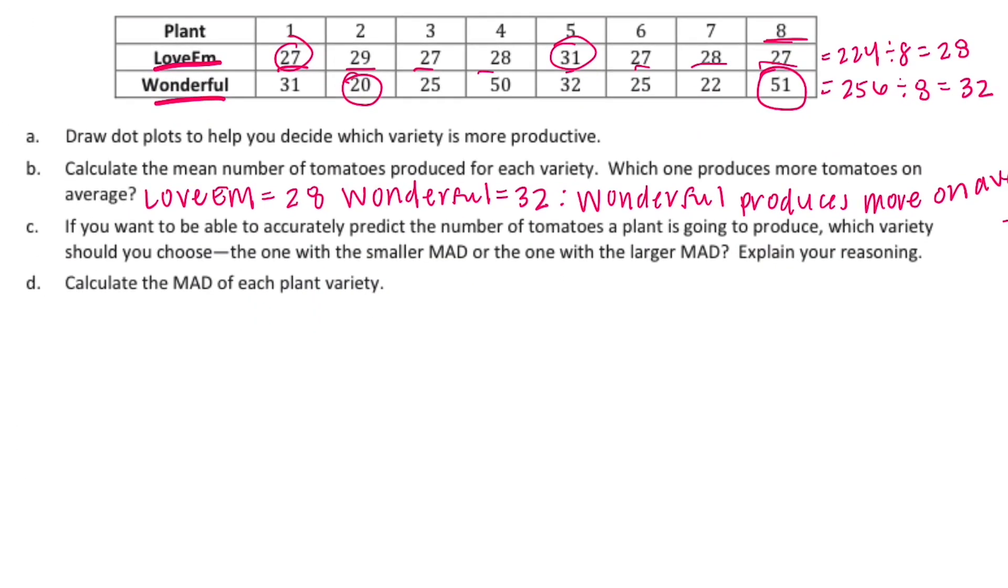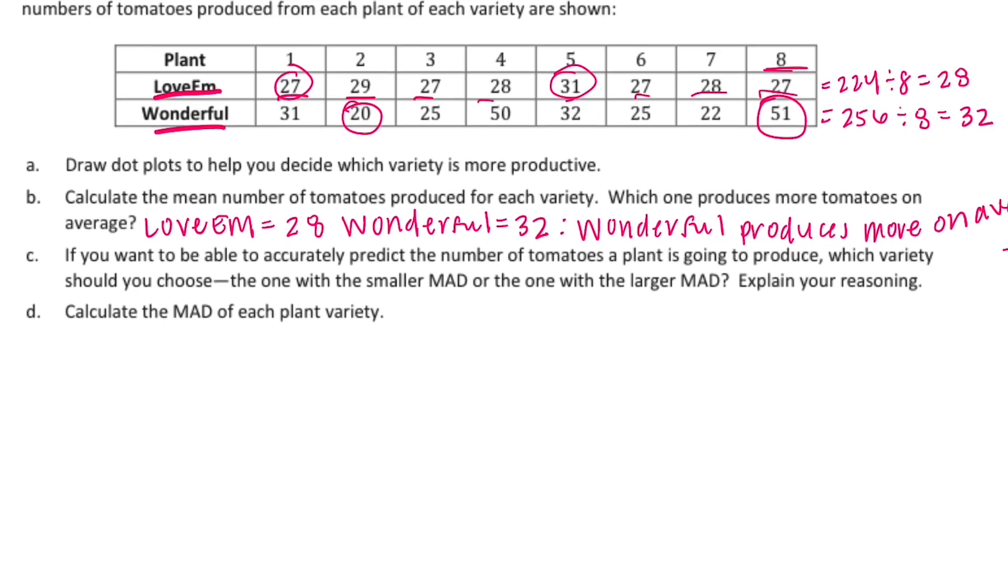Part C: if you want to be able to accurately predict the number of tomatoes a plant is going to produce, which variety should you choose? The one with the smaller MAD or the one with the larger MAD? So you want to be able to accurately predict which one, how much something is going to produce. Do you want something with a small MAD or a larger MAD? So a lot of variability or a little bit of variability? If you're trying to be accurate, then we want little variability. So you want the one with the smaller MAD.